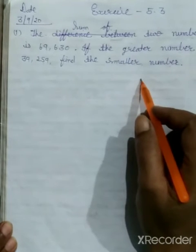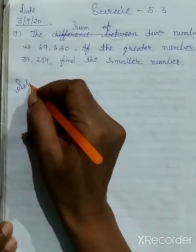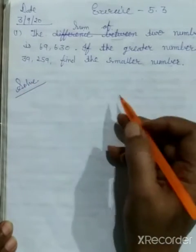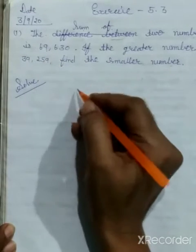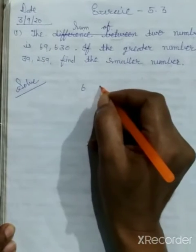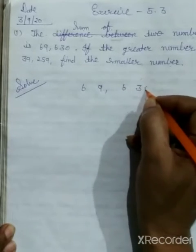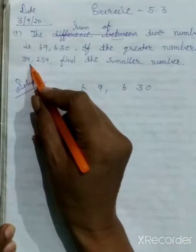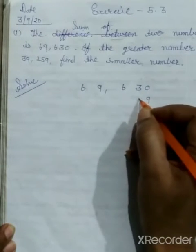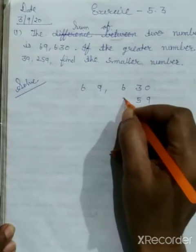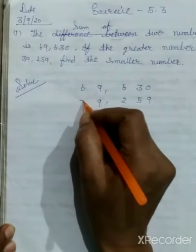So for this what will we do? We will subtract. Solve. First, the bigger number is this: 69,630.